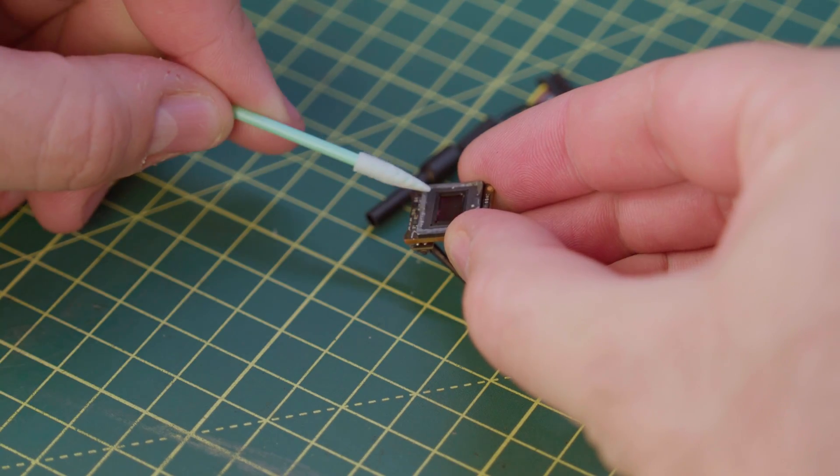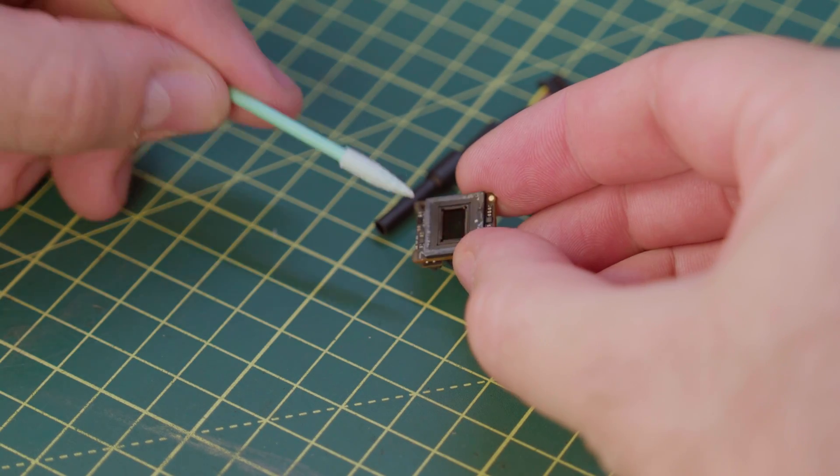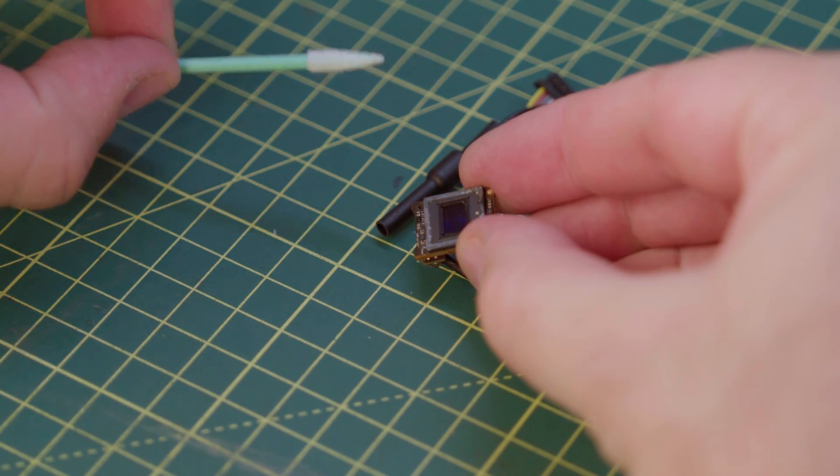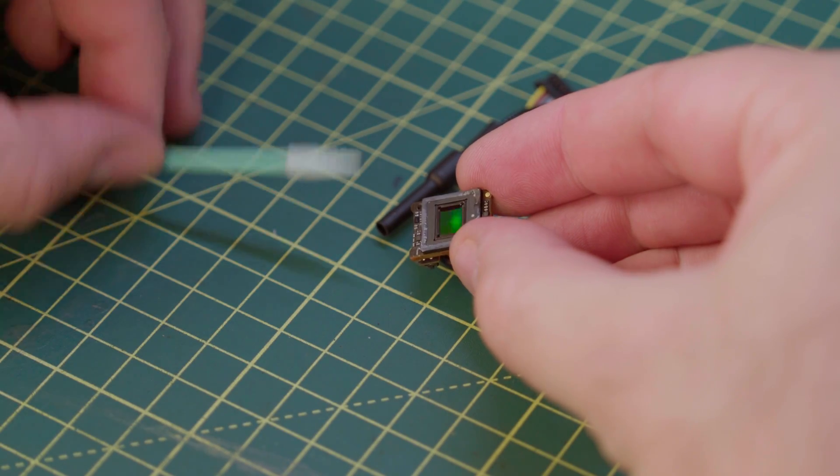I'm going to quickly remove the pieces of dust with a Q-tip. Luckily here, I managed to not put my fat fingers on the sensor, but if you do, it does clean up okay with a Q-tip and some isopropyl alcohol.